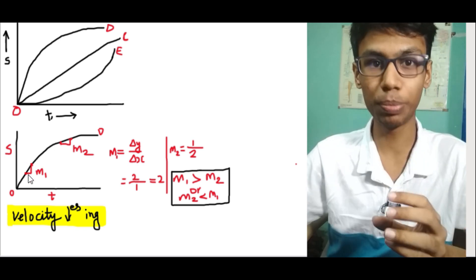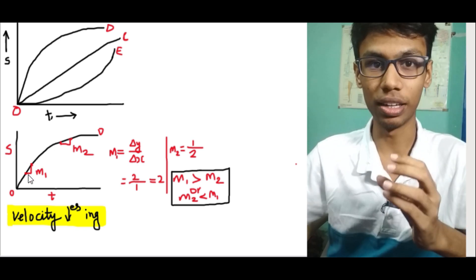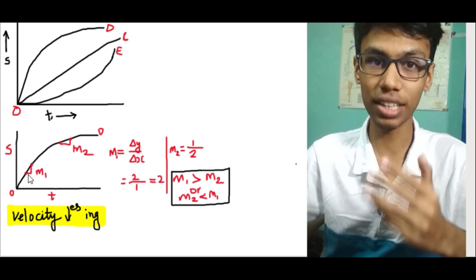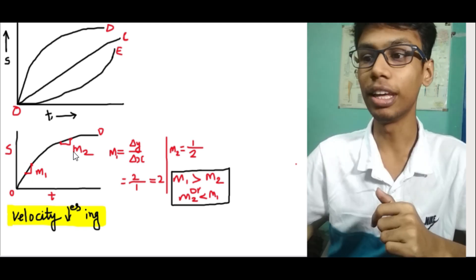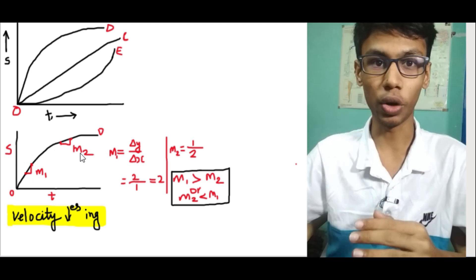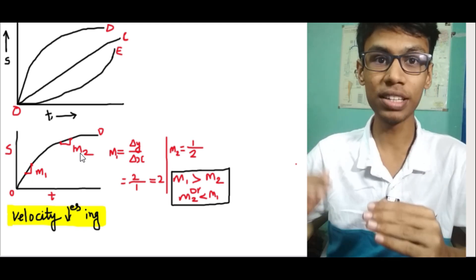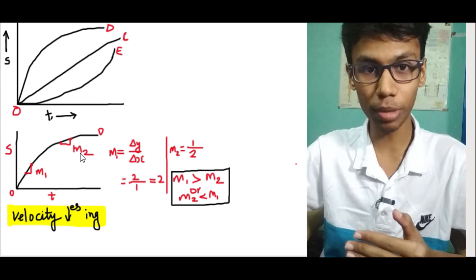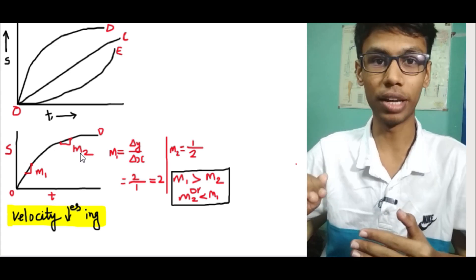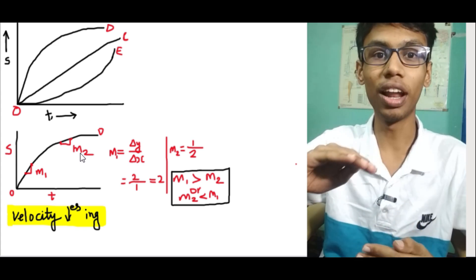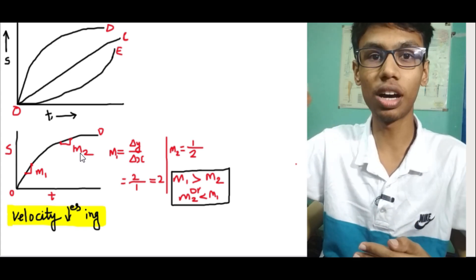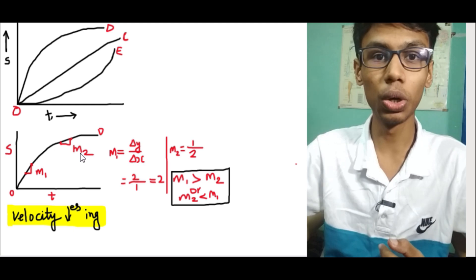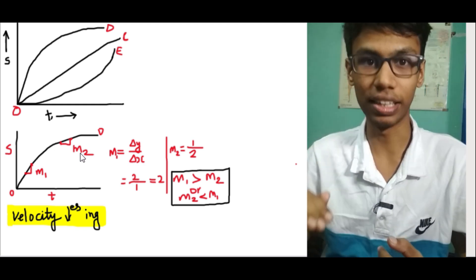At point M1 on the curve, velocity is less than at M2. That means in a parabolic OD curve, if you look at the curve, velocity goes on decreasing.